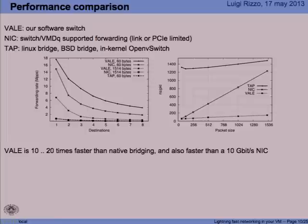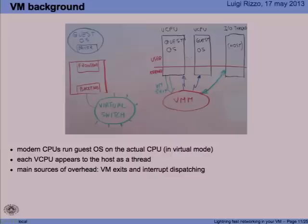These curves show the performance of a Vale switch — the top curve with variable numbers of destinations in the case of broadcast. This is the time spent per packet in nanoseconds, depending on packet size, for the Vale switch and for comparison solutions such as Linux bridge using TAP interfaces.